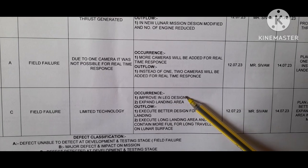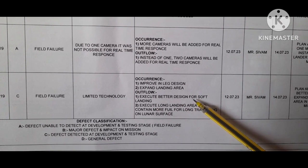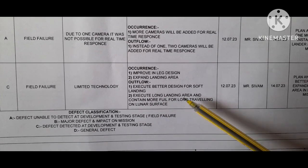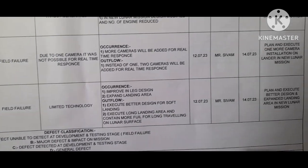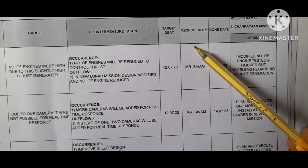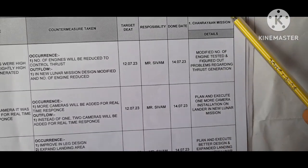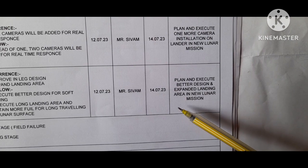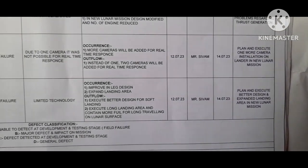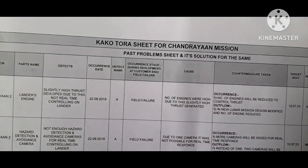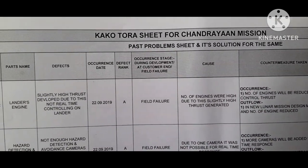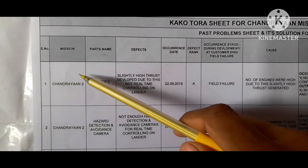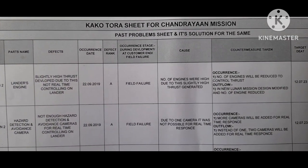Counter measure taken: improve the leg design, and expand the landing area on the lunar surface. Outflow: execute better design for soft landing, execute a longer landing area, and contain more fuel for long travel on the lunar surface. Target date, responsibility, and done date are given here. Details: plan and execute better design and expanded landing area in the new lunar mission — Chandrayaan 3.